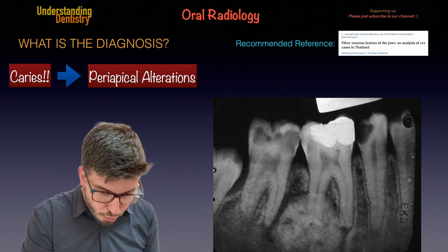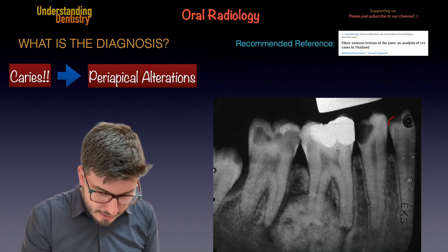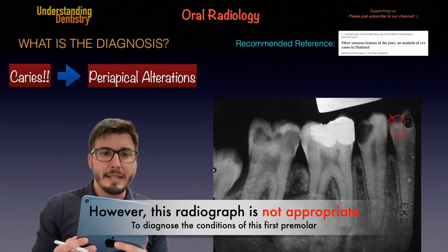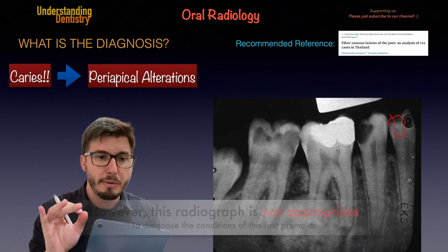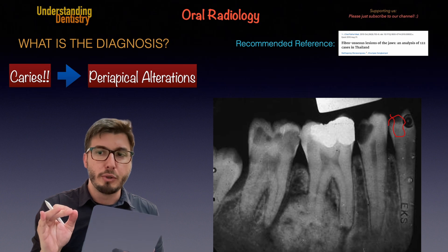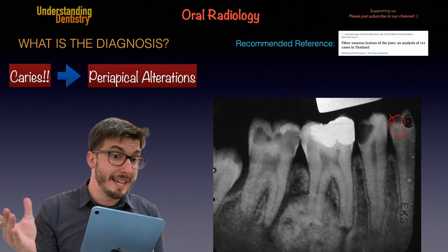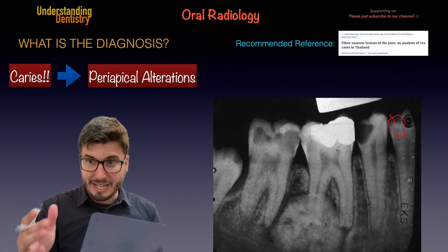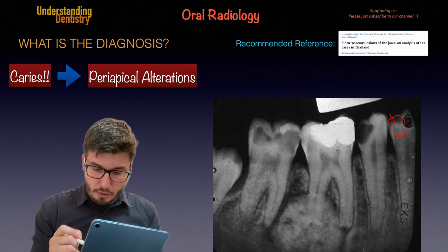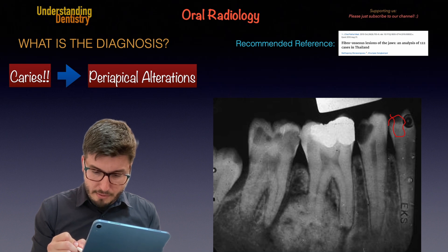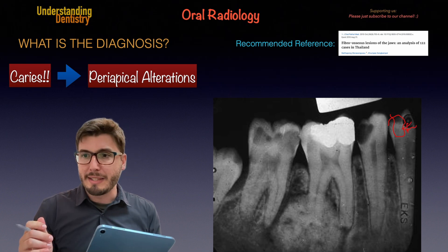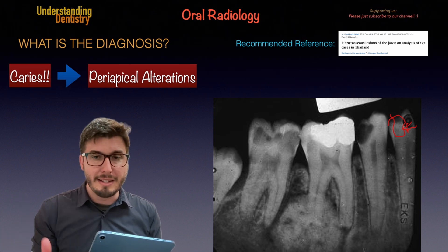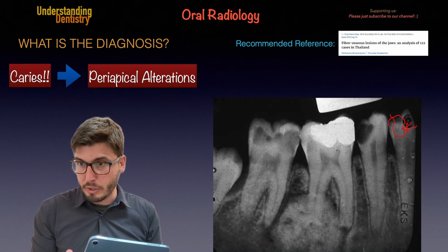Here we have occlusal caries, although you would be surprised if this has no clinical diagnosis. As you guys remember, the clinical diagnosis is the main one — the ICDAS classification is the main one for occlusal caries. But we are seeing that in the dentin, the beginning of the dentin, very close to the enamel, we can see that it's more radiolucent than the rest of the dentin. And then there is the clinical diagnosis of occlusal caries.